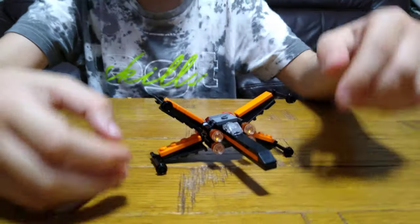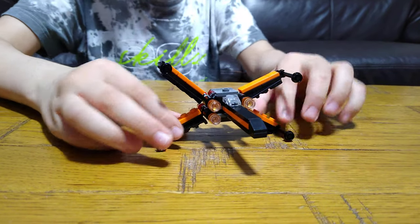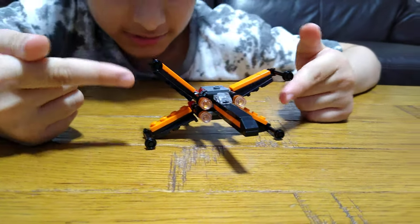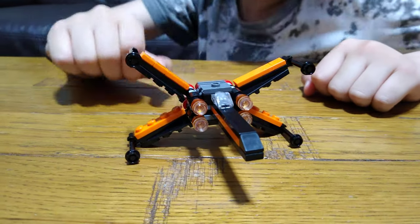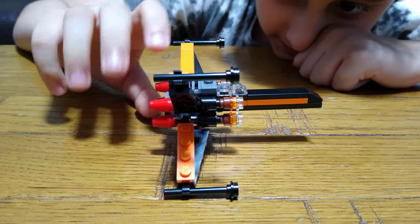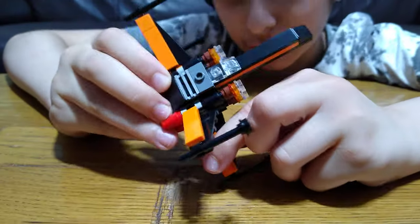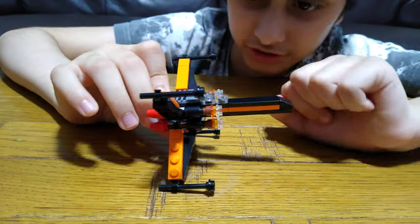Here we have Poe's X-Wing. The reason why it's called the X-Wing is because the wings look like an X. And it can stand up just like that. I don't actually have the Poe minifigure because I don't have any Lego Star Wars sets.